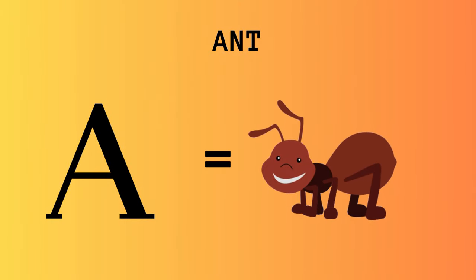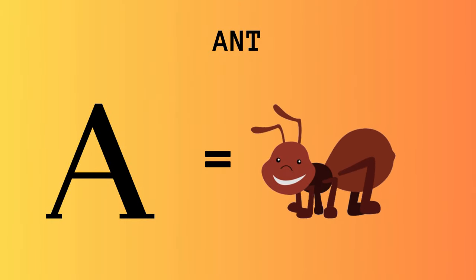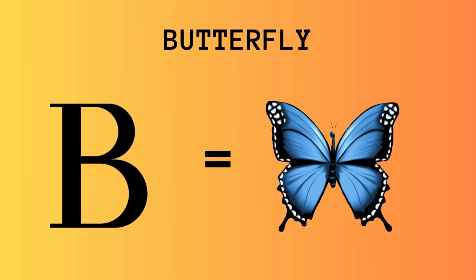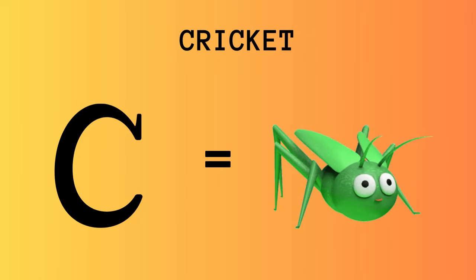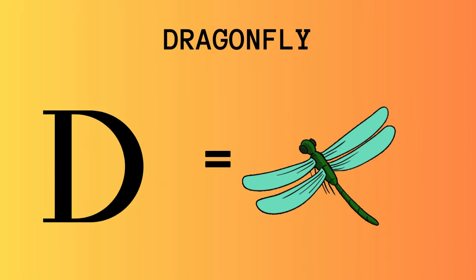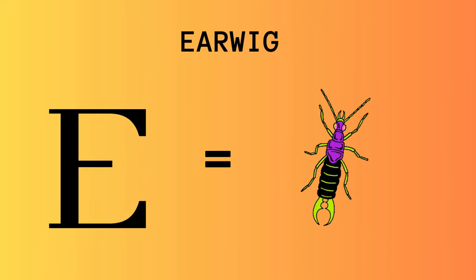A for Ant. B for Butterfly. C for Cricket. D for Dragonfly. E for Earwig.